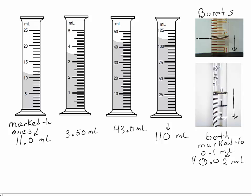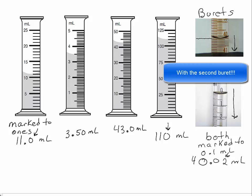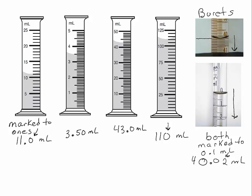With the second burette, you can see the volume is very close to zero — just below zero based on where the meniscus is. If you think the volume is dead on the first marking, you should record that as 0.10 milliliters. If you think it's not quite there, you might say 0.09 or 0.08 milliliters. This is how you determine the precision of measured values, and both of these burettes are precise to the hundredths place.